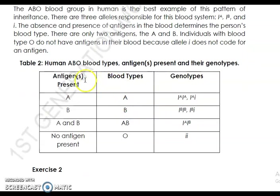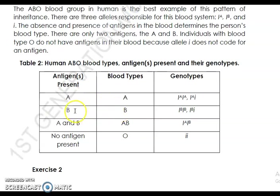Let's proceed to the table. The table has three columns: antigens present, blood types, and genotypes. In humans, there are four blood types: Type A, Type B, Type AB, and Type O. For blood type A, the antigen present is A. For blood type B, the antigen present is B. For blood type AB, the antigens present are A and B. For blood type O, there is no antigen present — that is why O is called the universal donor; it can donate to everyone.